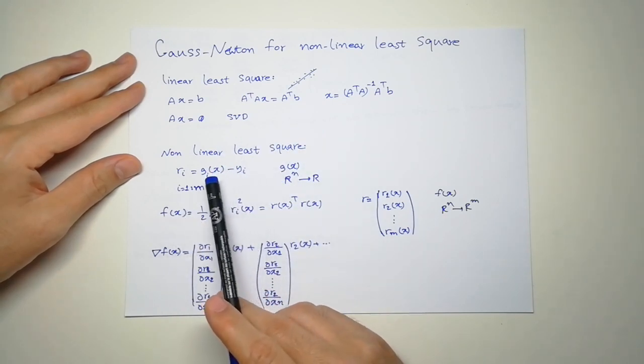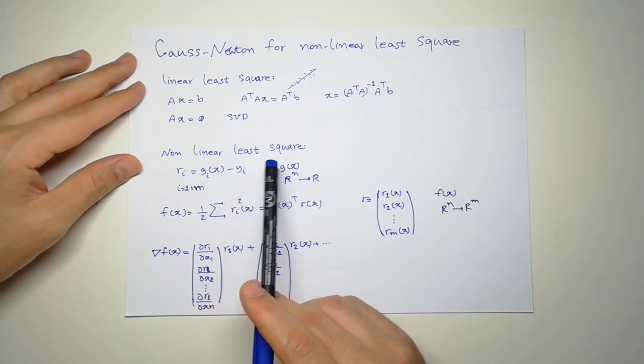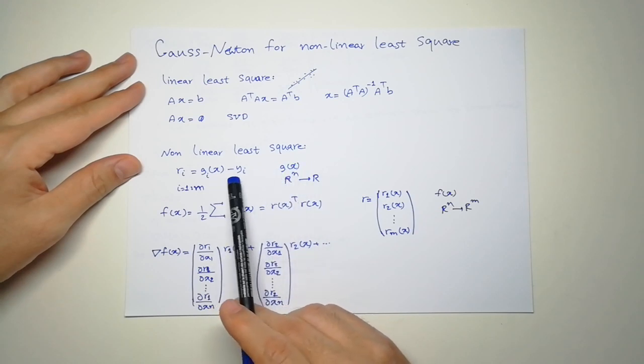We want to find the parameters for every G such that the distance between every G function and observation or sample data is minimized.